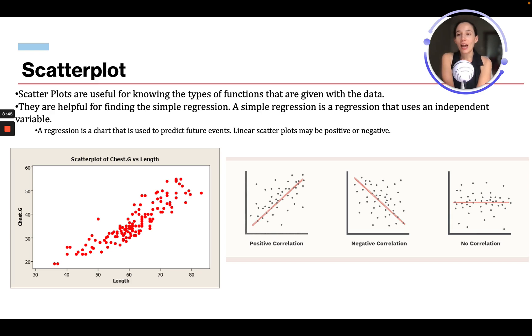So then we have a scatter plot. These are useful for knowing the types of functions that are given with the data. They're helpful for finding simple regression. A simple regression is a regression that uses an independent variable. A regression is a chart that is used to predict future events. A linear scatter plot may be positive or negative.